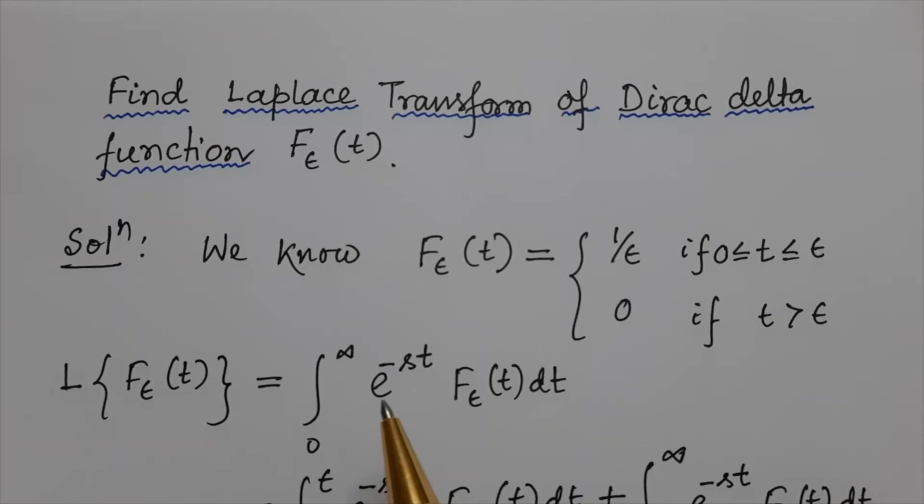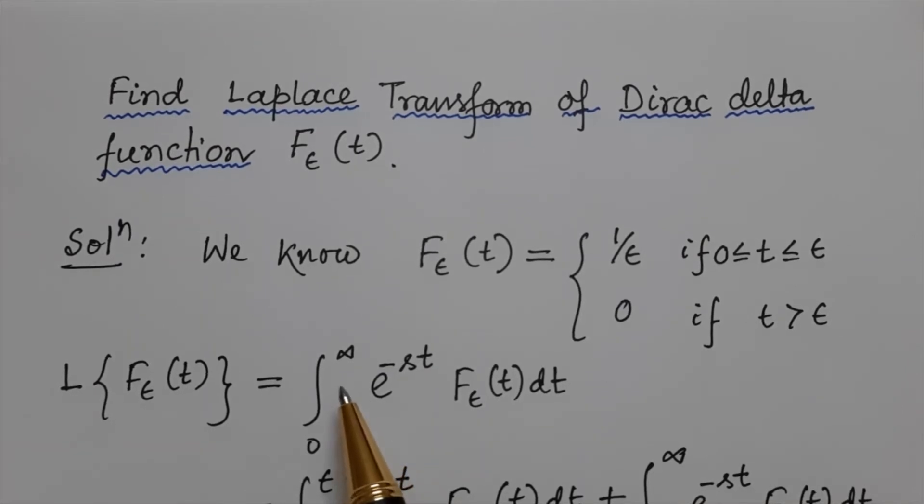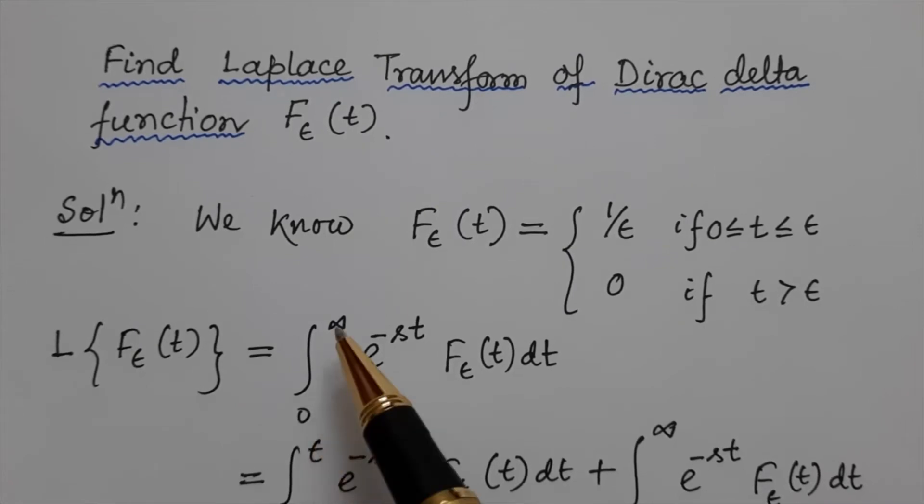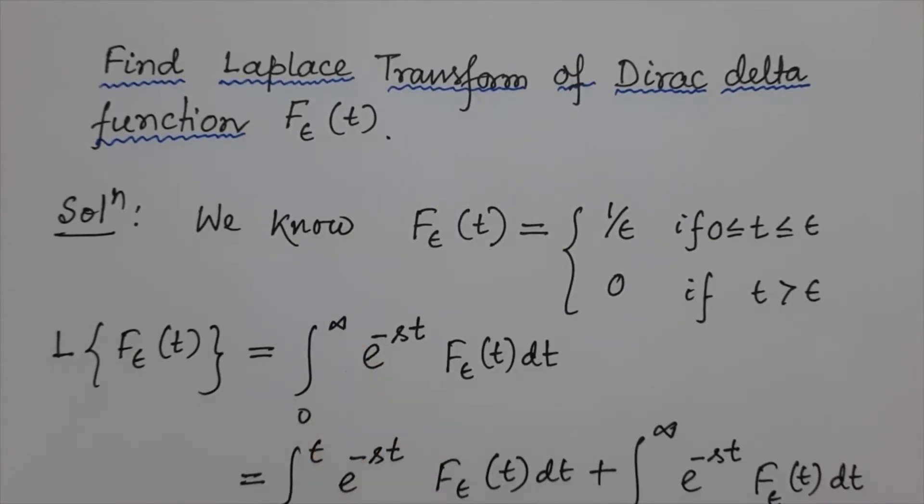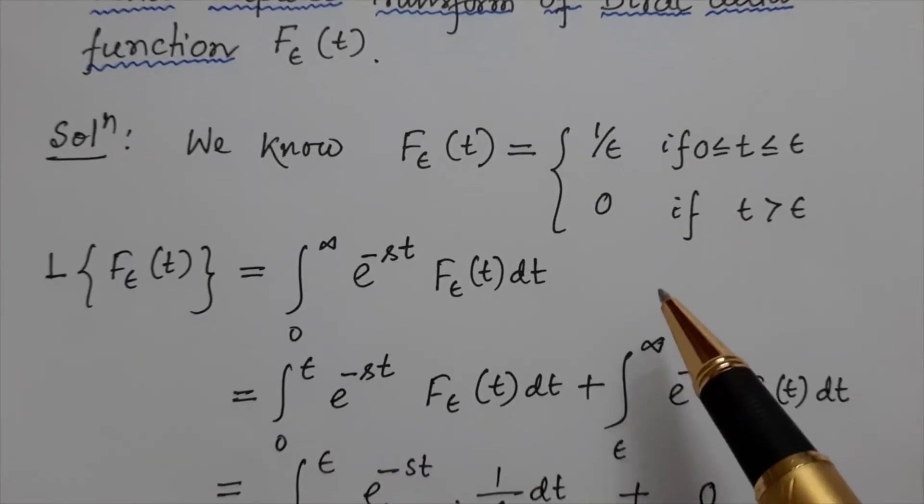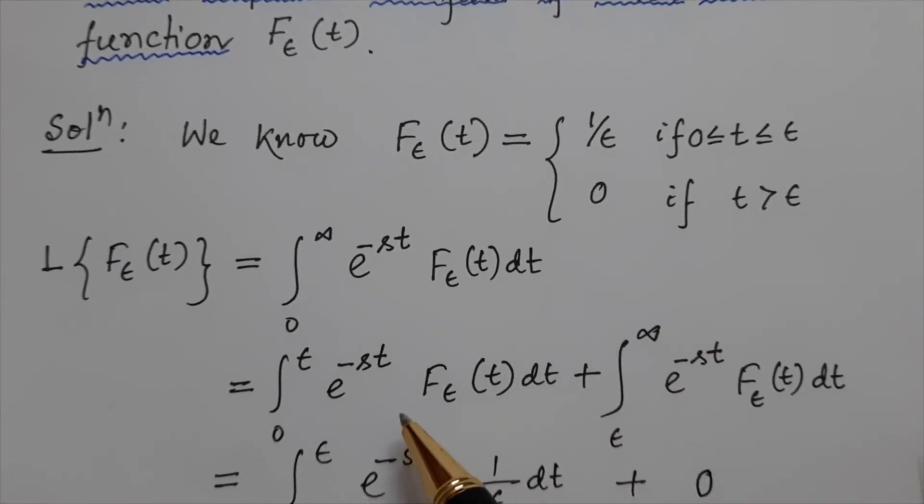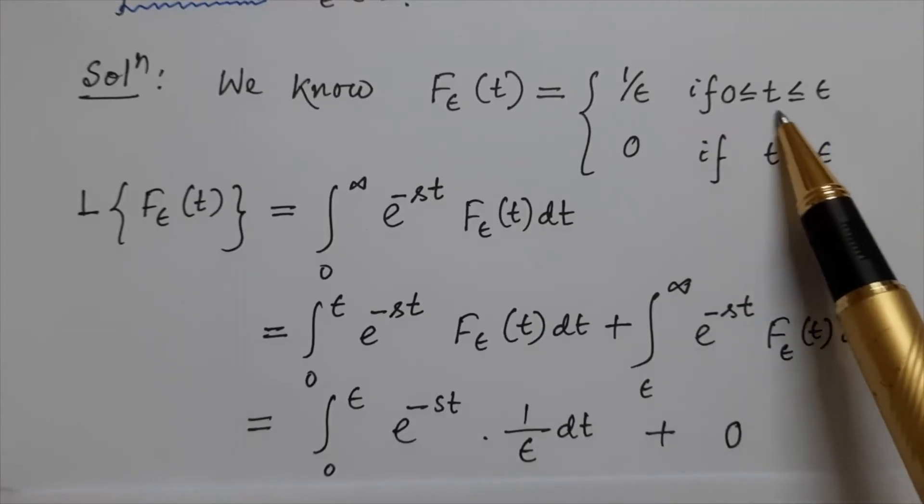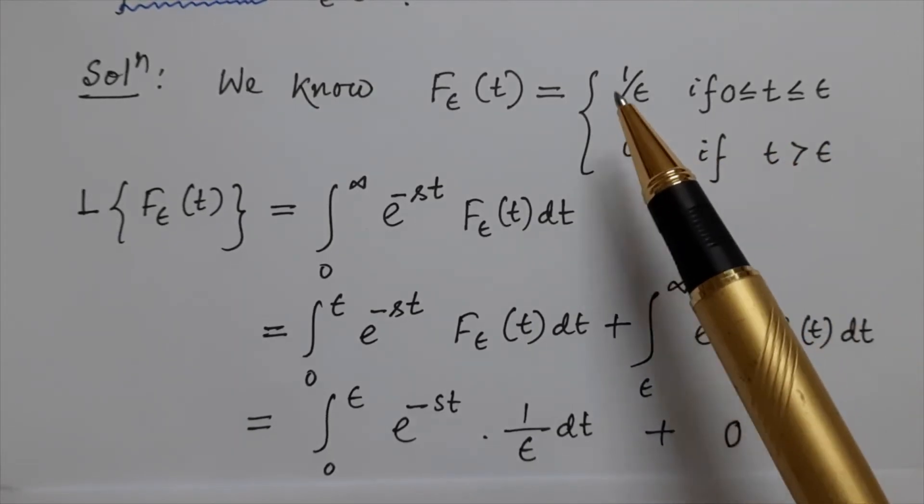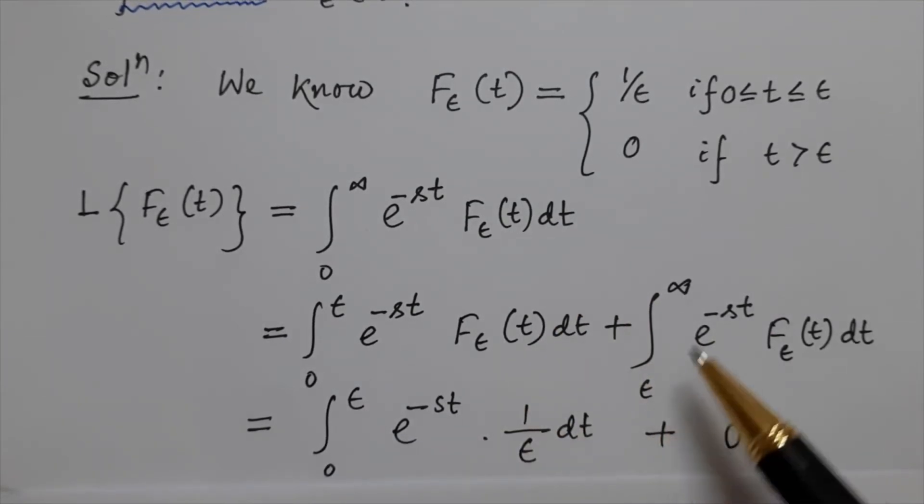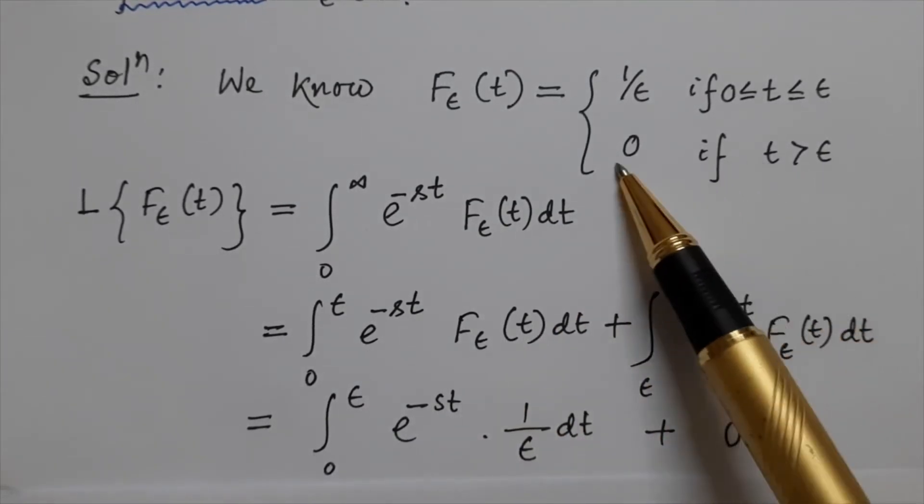Now let us break this interval from 0 to infinity as 0 to ε and ε to infinity. From 0 to ε, the functional value is 1/ε, and from ε to infinity, the functional value is 0.